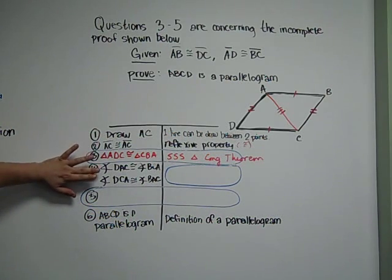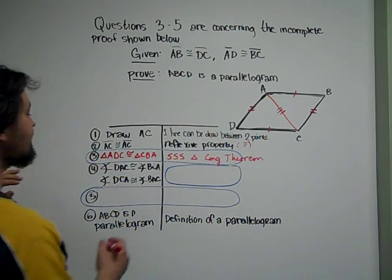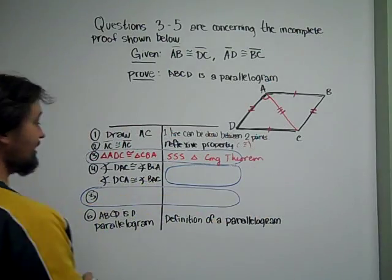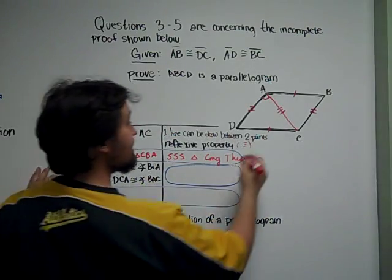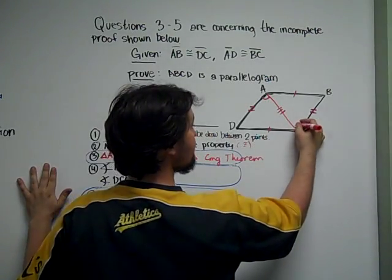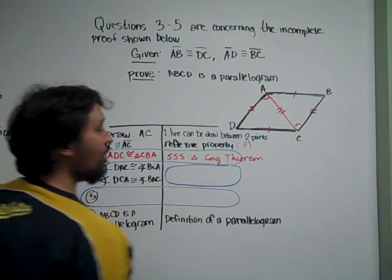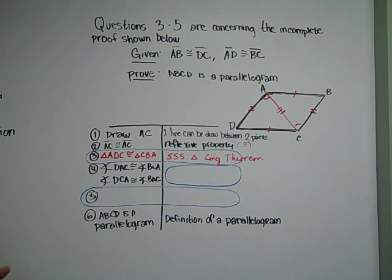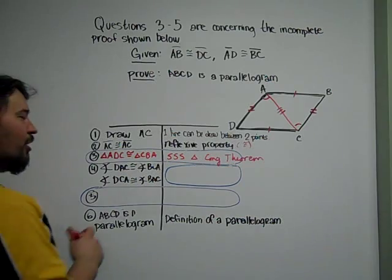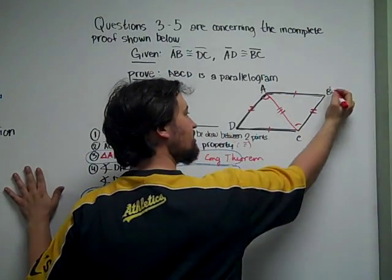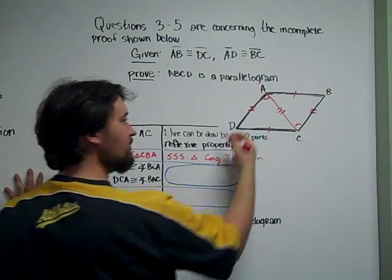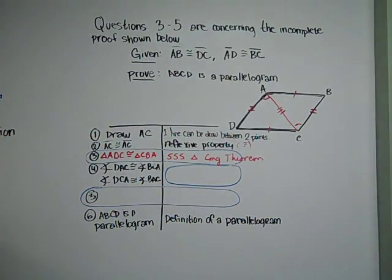That's what number four is about. Angle DAC is congruent to angle BCA, and you should see that N-shape right there. Alternate interior angles are always going to be based on the N-shape. However, in this case, it's not actually alternate interior angles — so that's going to be one of the trap answers here.